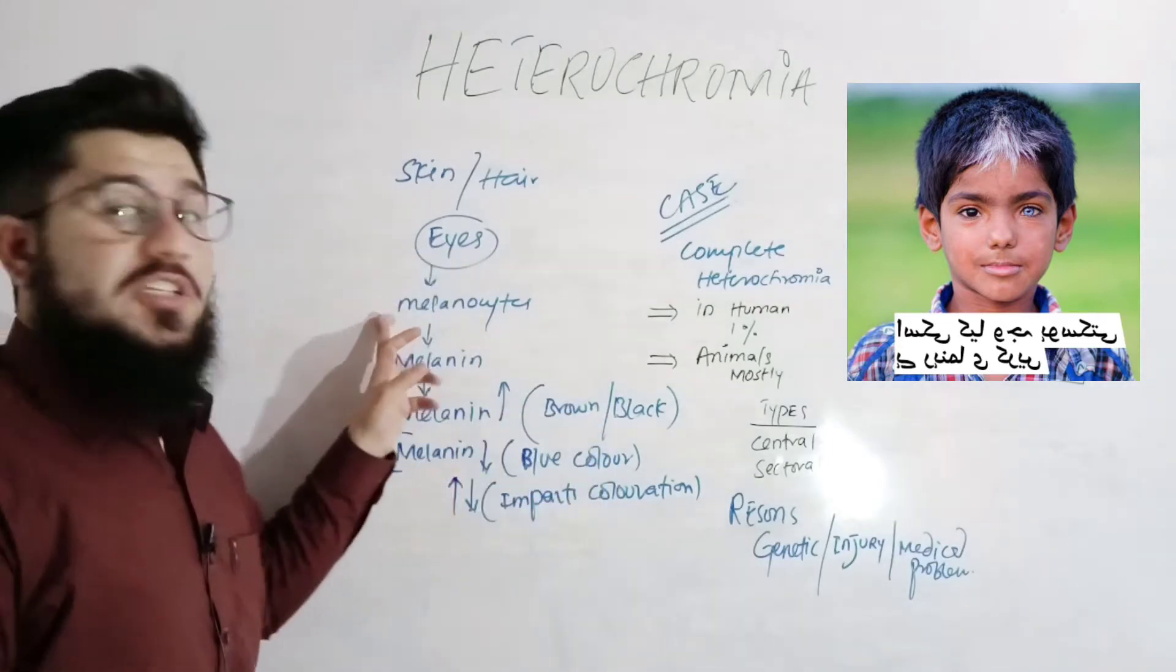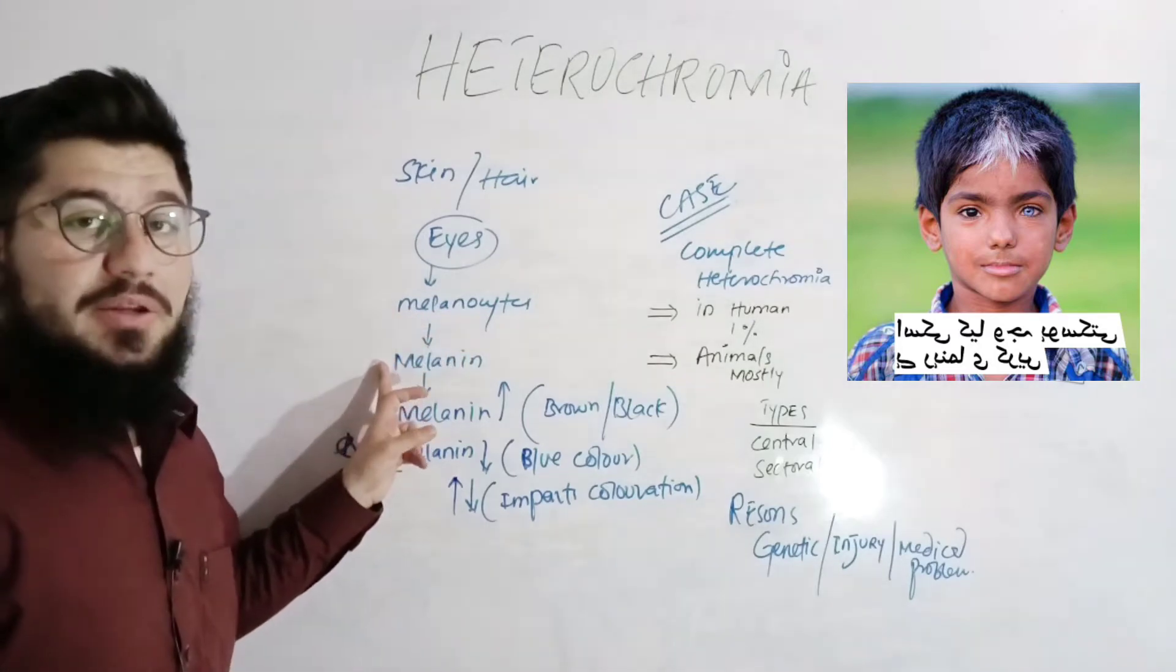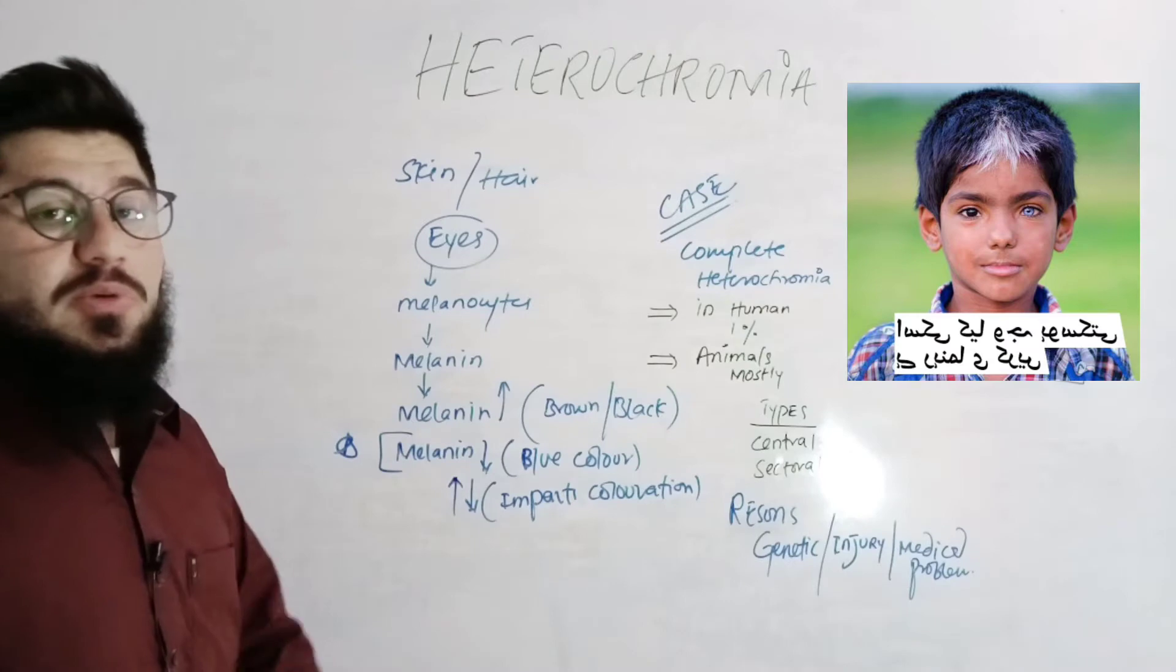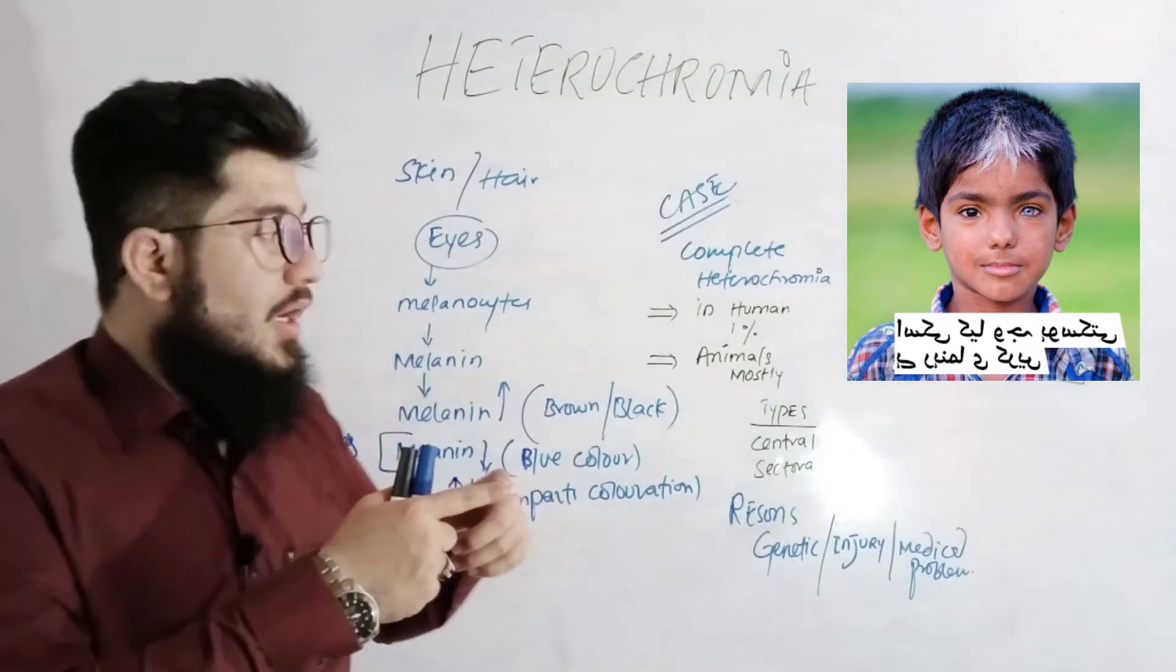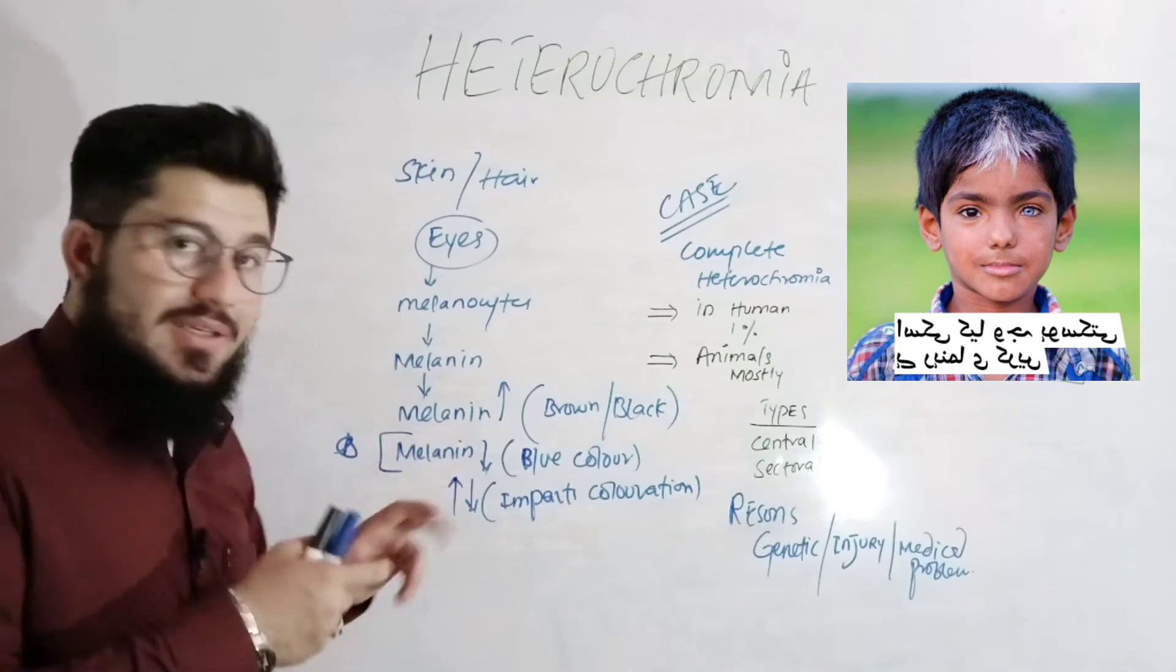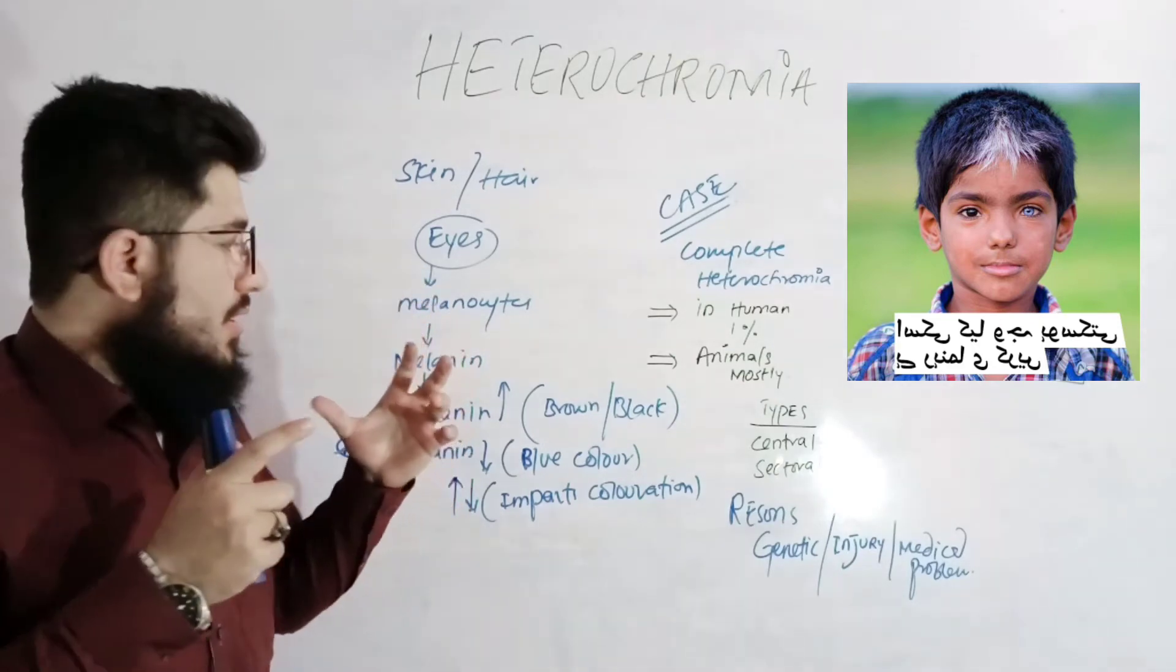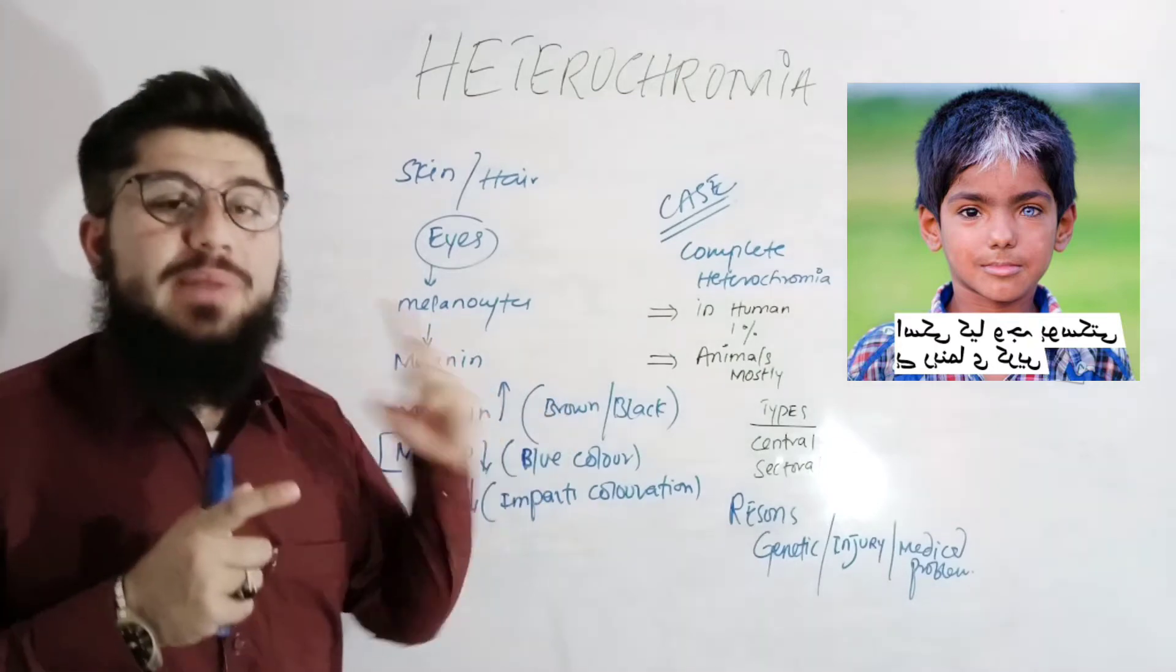In the eyes, we have certain melanocytes that are responsible to produce melanin, and then this melanin is responsible to impart color. Now, coming to the different types of color, if melanin is produced in excess, in large amount, that will impart brown or black color.